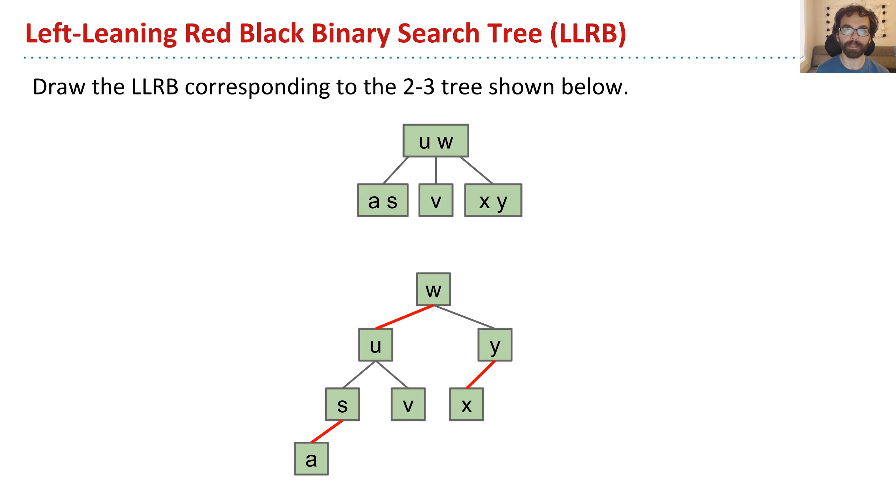Now that you understand what left-leaning red-black binary search trees are, let's talk about why they're useful. So let's start by discussing the search operation. If I want to find something in an LLRB, it is easy. It's exactly like finding something in a regular binary search tree. In fact, it is just a binary search tree.